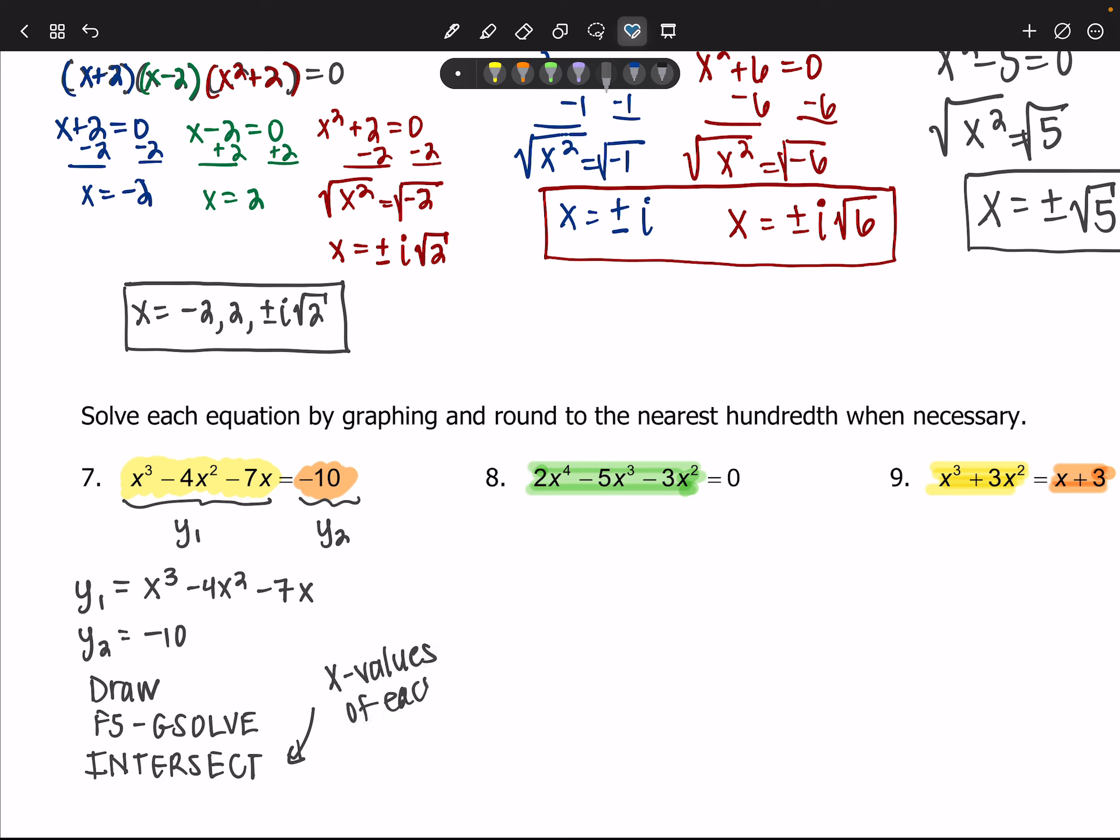The reason why it's just the x values is because the original equation only has x's: x cubed minus 4x squared minus 7x equals negative 10. So we're just solving for x, so it's the x values of each intersection point. And that's going to be the same for number nine.